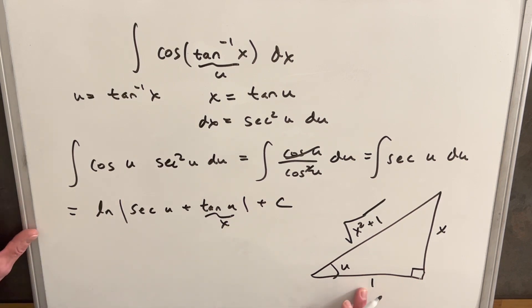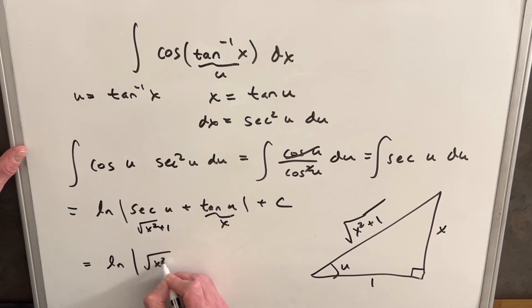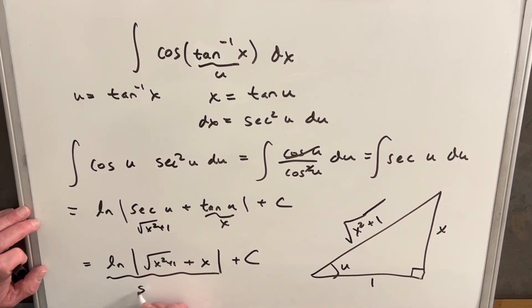So then secant is going to be hypotenuse over adjacent opposite of cosine. So this is going to be just x squared plus 1. So for our final answer let's just write it out. We're going to have ln absolute value x squared plus 1 plus x plus c. This is the same thing as hyperbolic inverse sine of x.